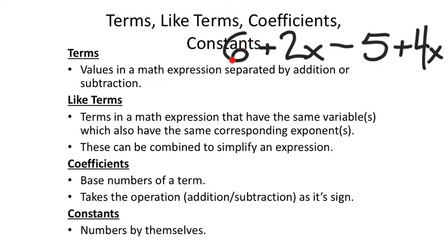It's like saying 6 apples and 2 oranges gives you 8 apples — no, that's not what it gives you. You have to keep those separated because they're not the same item. Like terms means you have the same item: 2 apples and 4 apples is 6 apples. So you have to search out like terms through an expression and combine them.